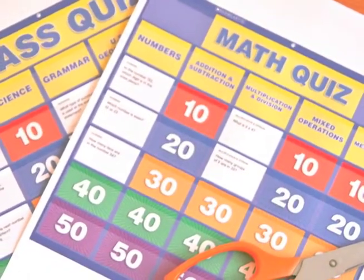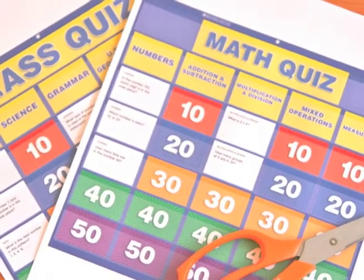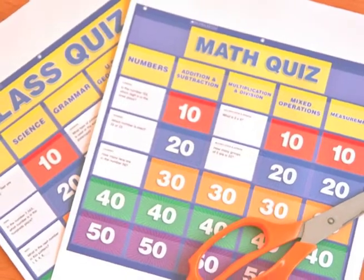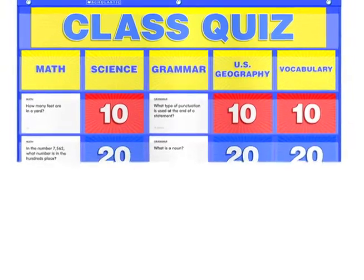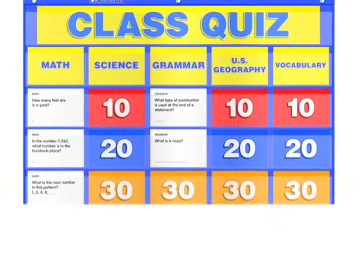Simply cut out the title cards, questions, and points that come with the pocket chart. Hang the chart on a bulletin board or pocket chart stand and arrange the title cards across the top. Then arrange the questions in columns from easiest to hardest, top to bottom.